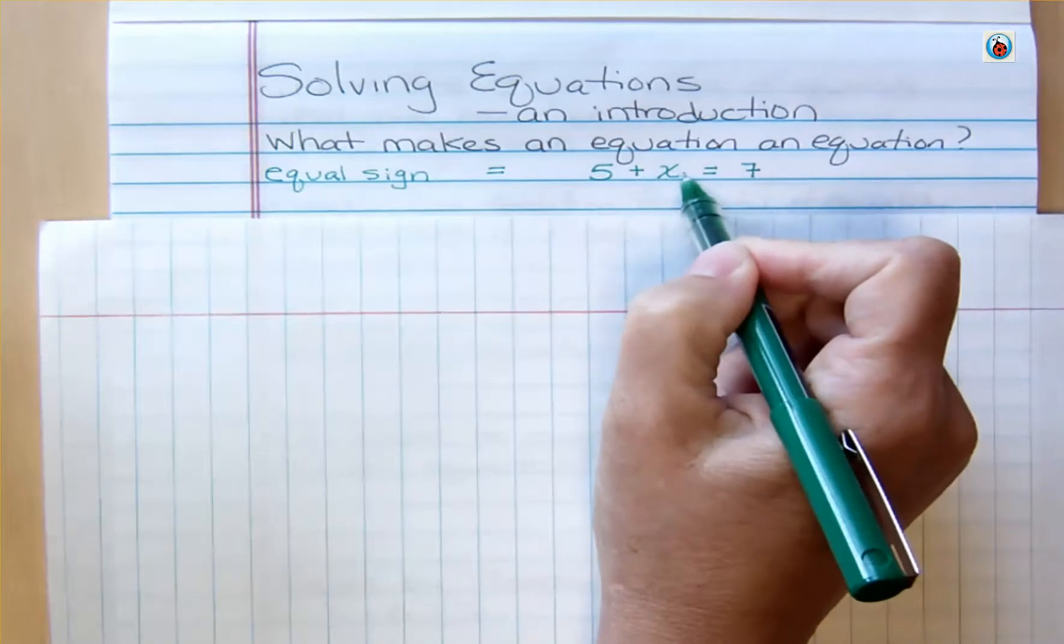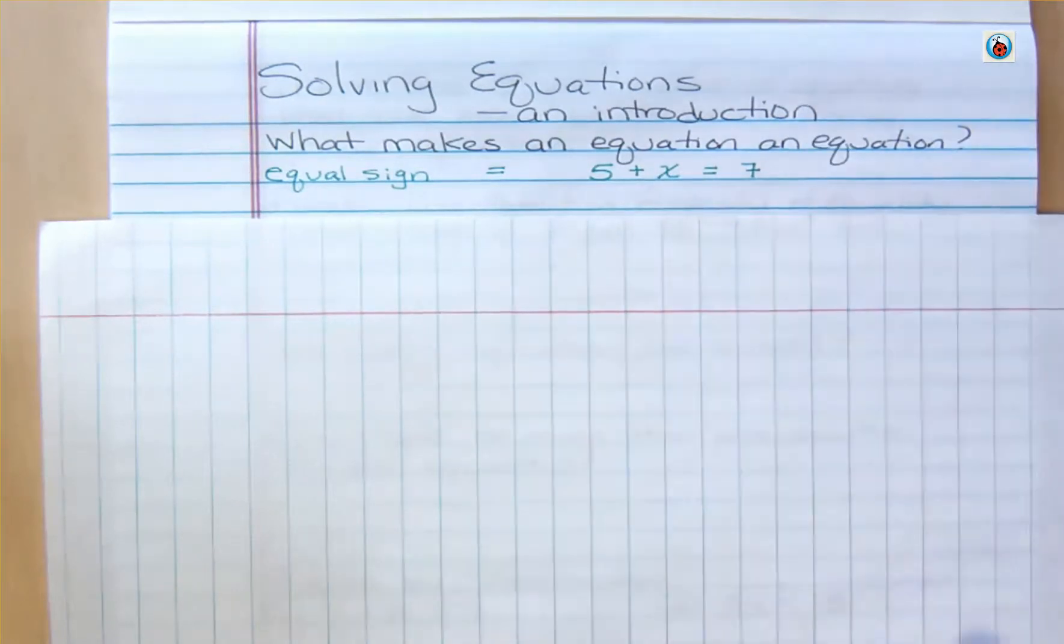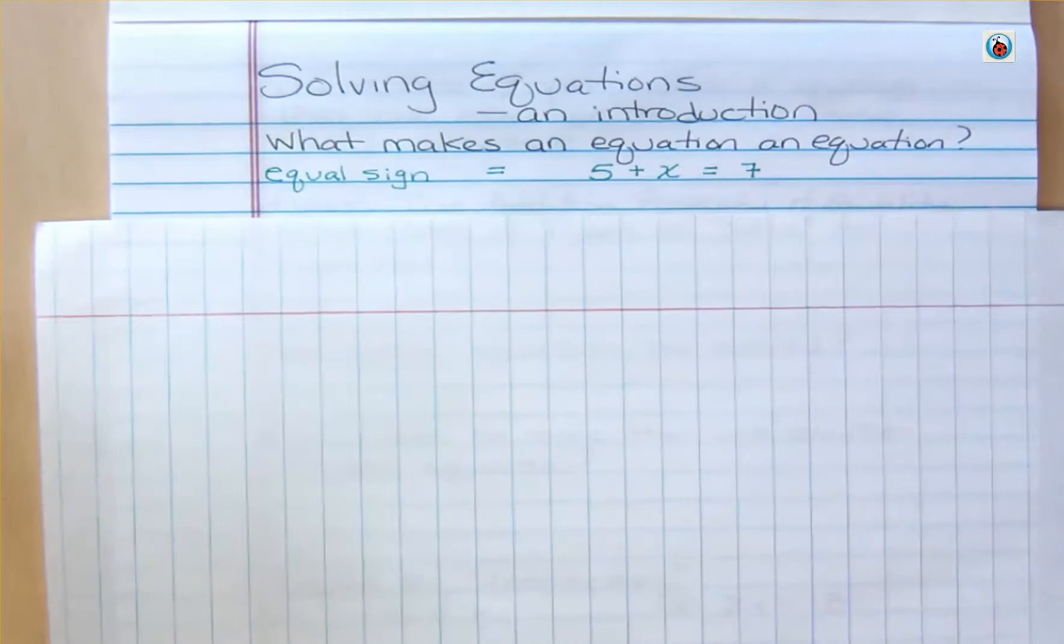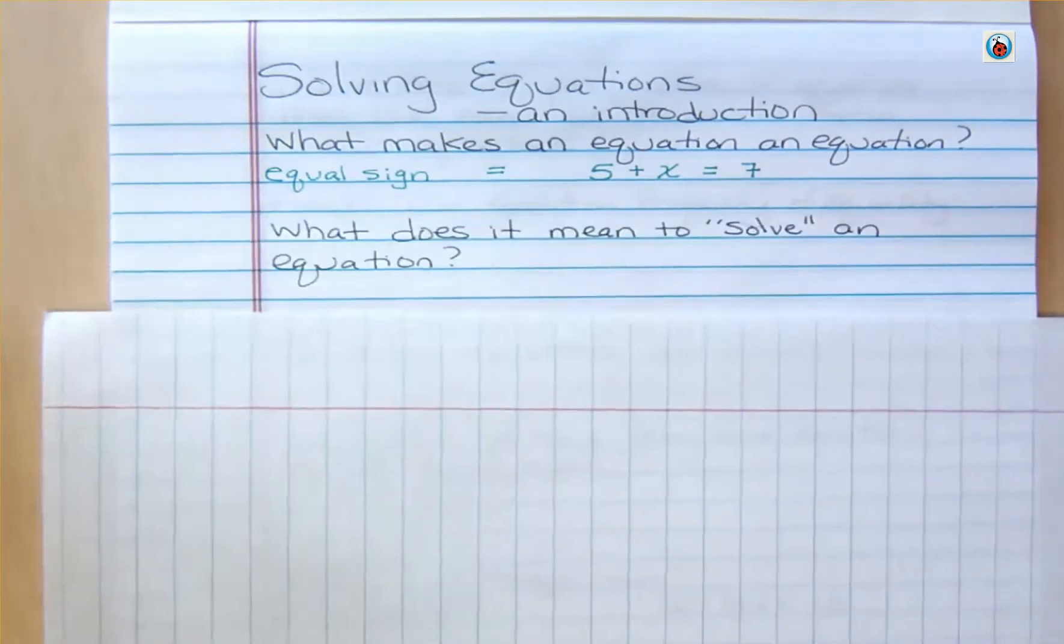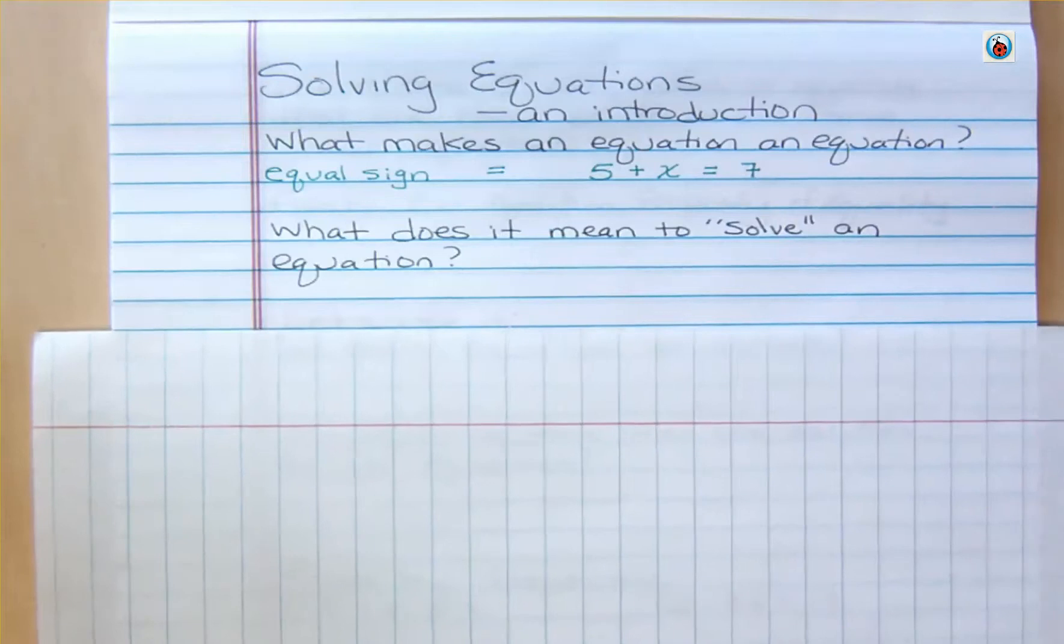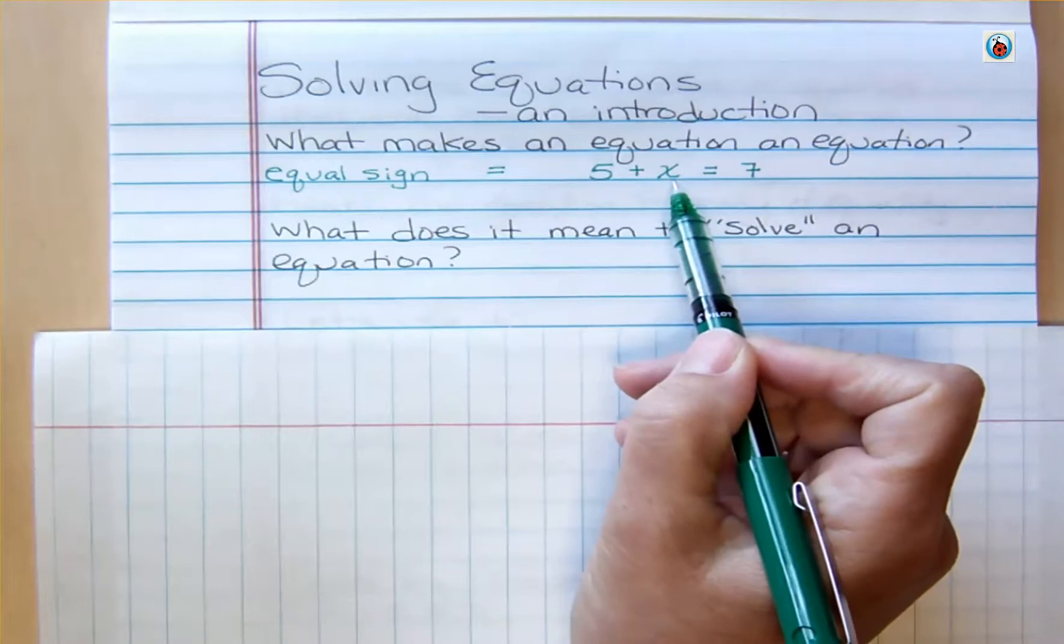This variable that I have right here, x, is to the first power. We can have different powers of x. It doesn't matter about that. What matters is, does it have an equal sign? What does it mean to solve an equation? When I ask you to solve an equation, or if you have a problem that says solve an equation, that means I'm asking you to find out what the variable equals in this situation. Now, it's called a variable because it could be different in different problems. So x in this case...